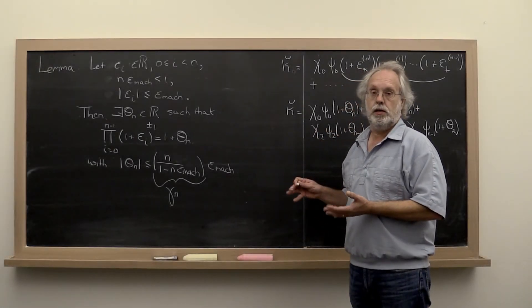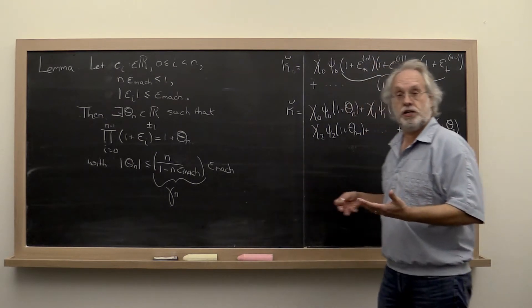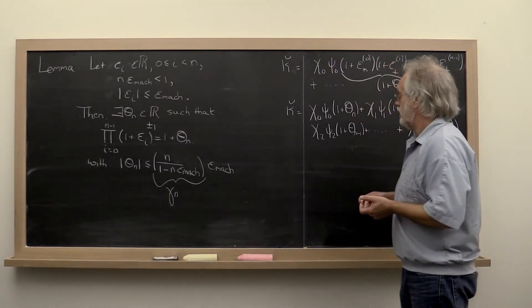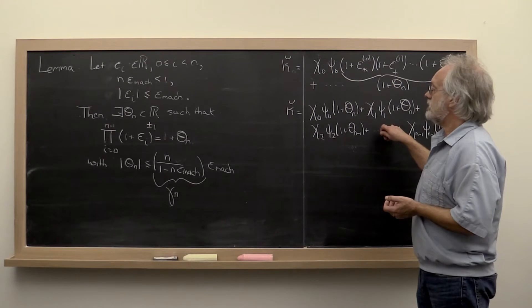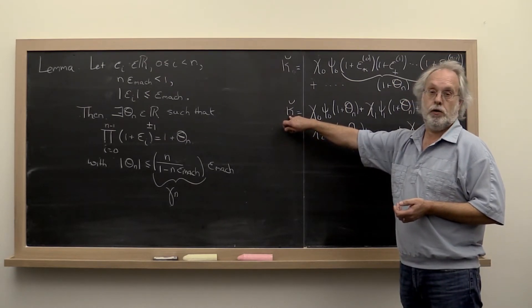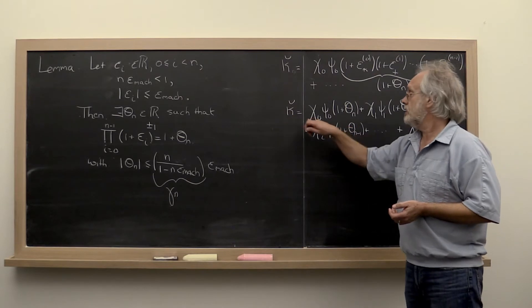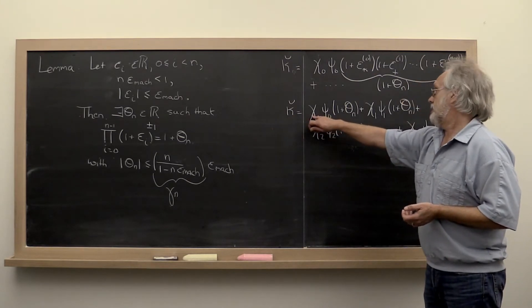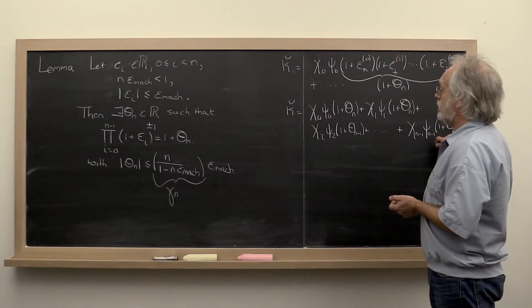With this we can take this really ugly expression that we had previously and write it much more concisely as the computed value when you do your dot product with vectors of size n is given by the exact dot product,